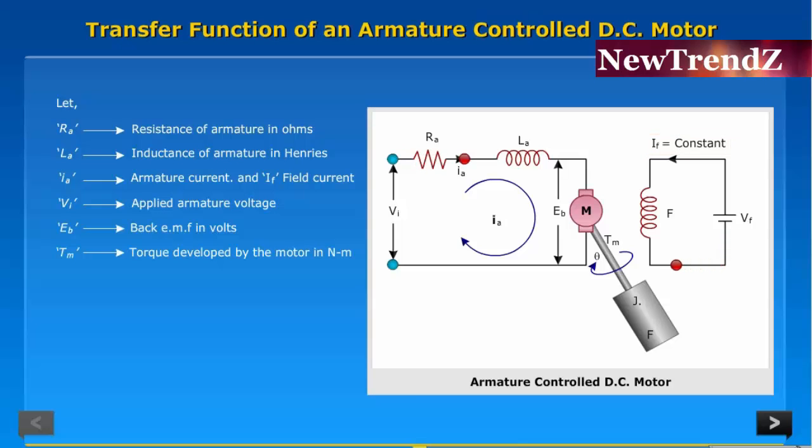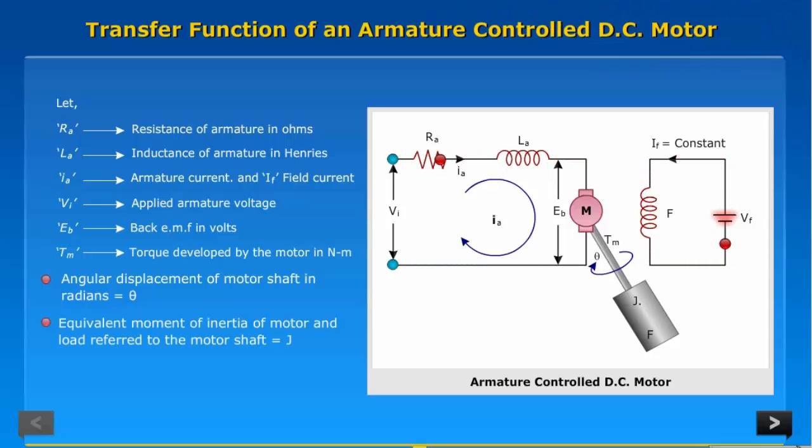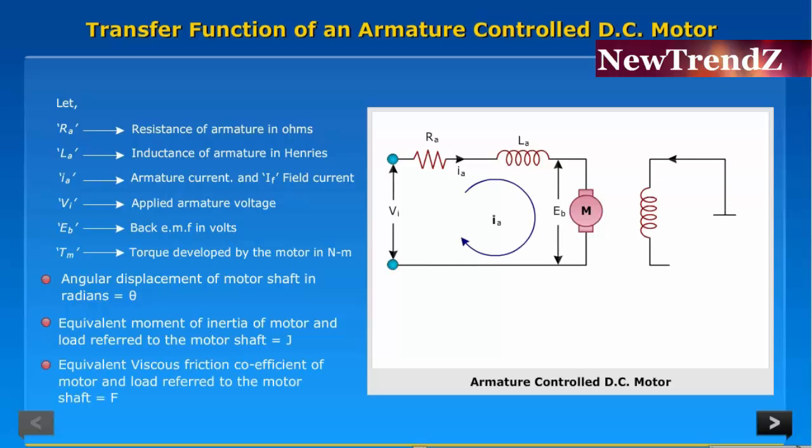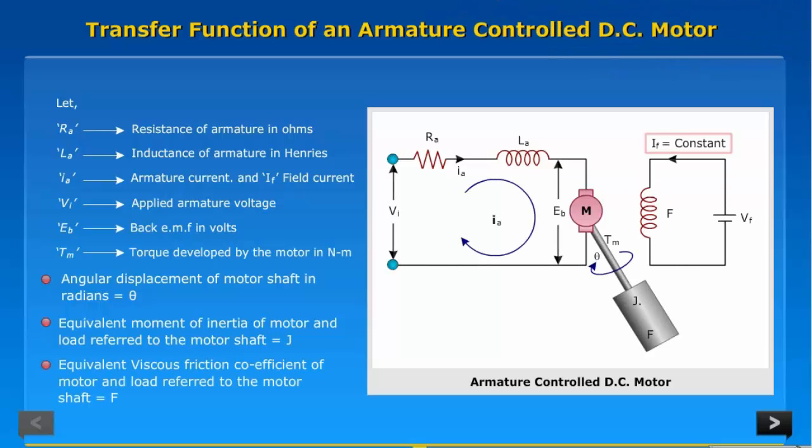Angular displacement of motor shaft in radians is equal to theta. Equivalent moment of inertia of motor and load referred to the motor shaft is equal to J. Equivalent viscous friction coefficient of motor and load referred to the motor shaft is equal to F.